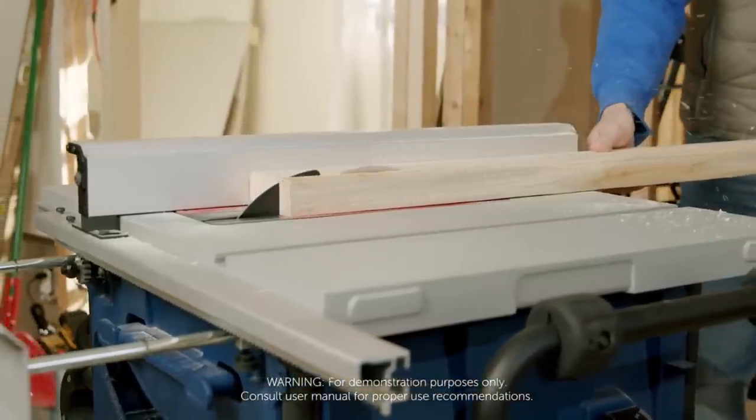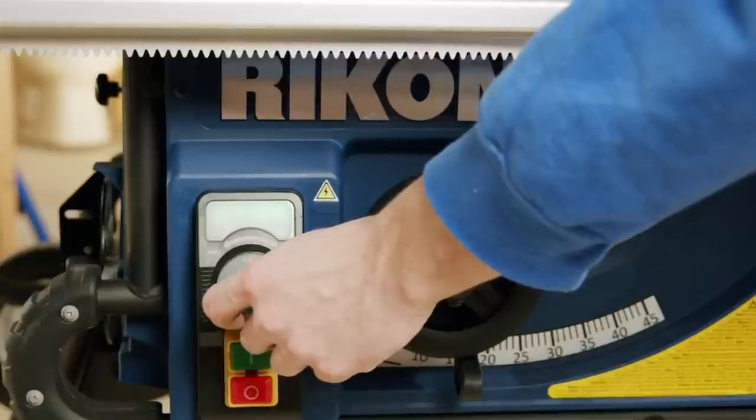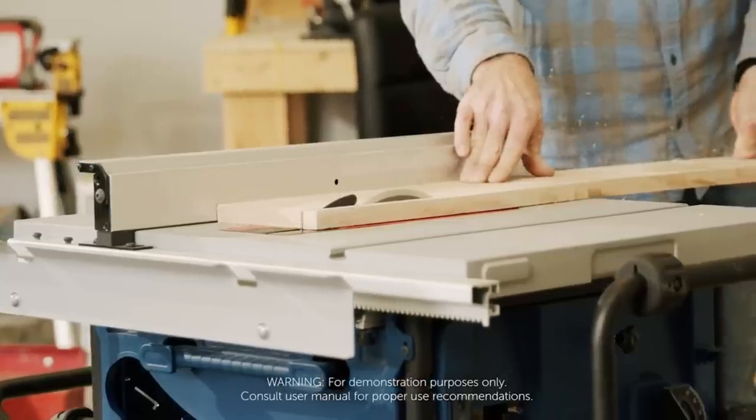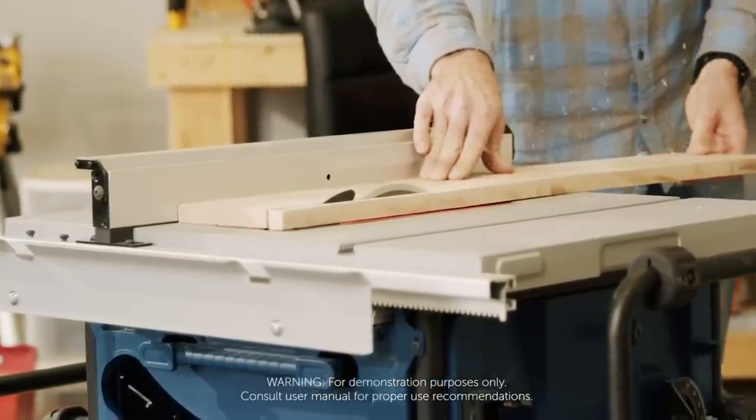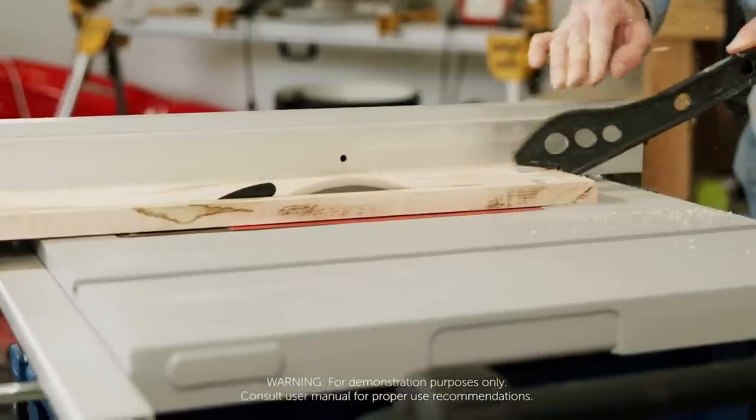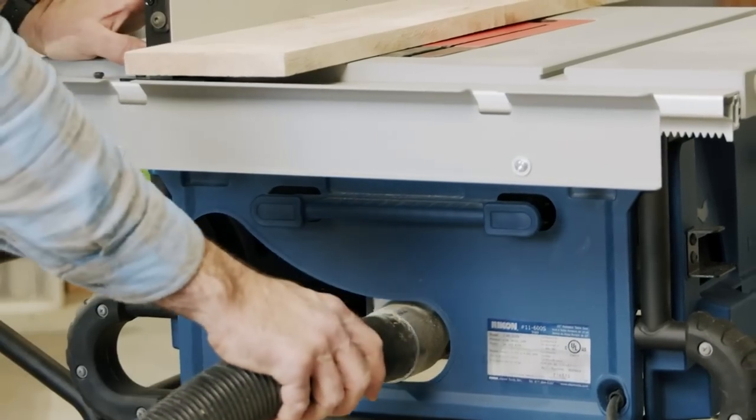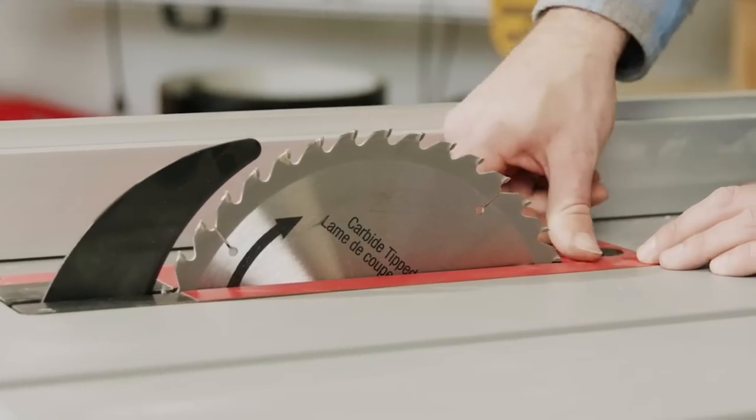The saw features variable speed control for exact blade speed modifications, guaranteeing accurate cuts. With a 28-inch rip capacity, it can easily slice through large boards, while its 3.125-inch maximum depth of cut facilitates precise cross-cuts and dados.